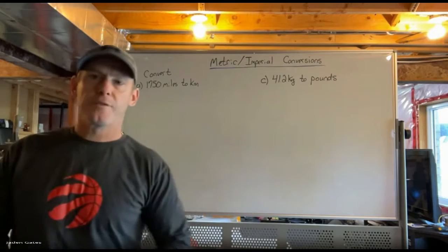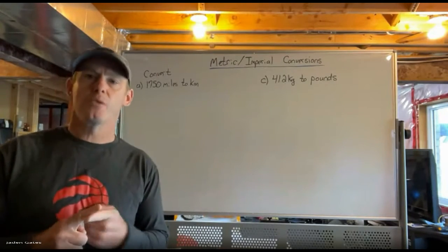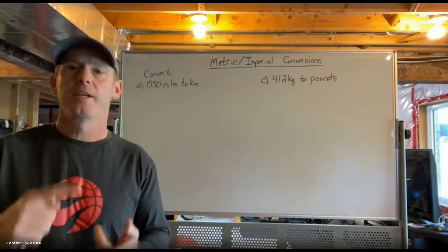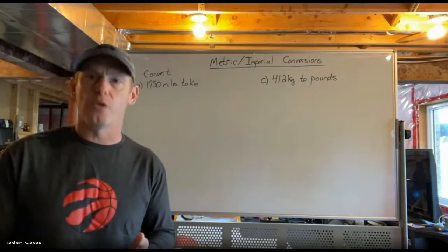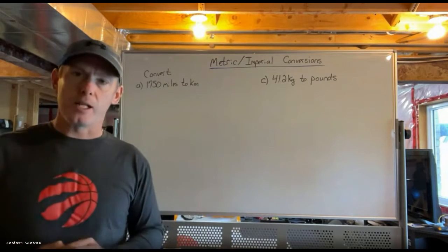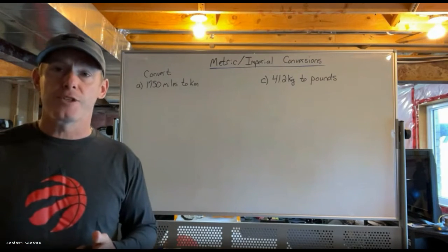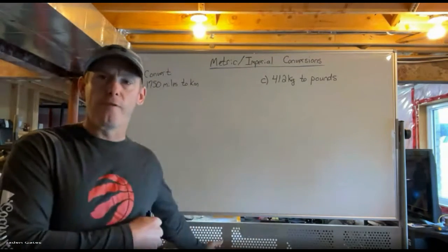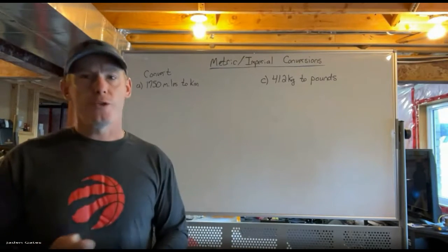In our last few classes we looked at metric measurement conversions, which was the easiest one because you're always multiplying or dividing by multiples of 10 — so 10, 100, or 1,000. Then last class we got into imperial measurement, the American stuff dealing with feet and miles, and we looked at creating charts and using our conversion sheet to set up and solve equations.